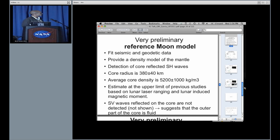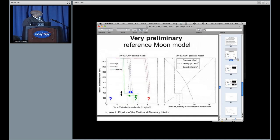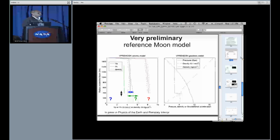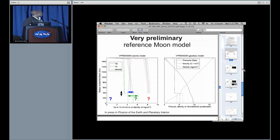The SV waves are not reflected on the core, not detected, which favors a model of the outer part of the core which is liquid. However, this model is very preliminary. Why? Because we have large error bars here on the core radius, and we have large error bars here on the S-wave velocity profile at the base of the mantle. And we don't know at all what is the core structure.